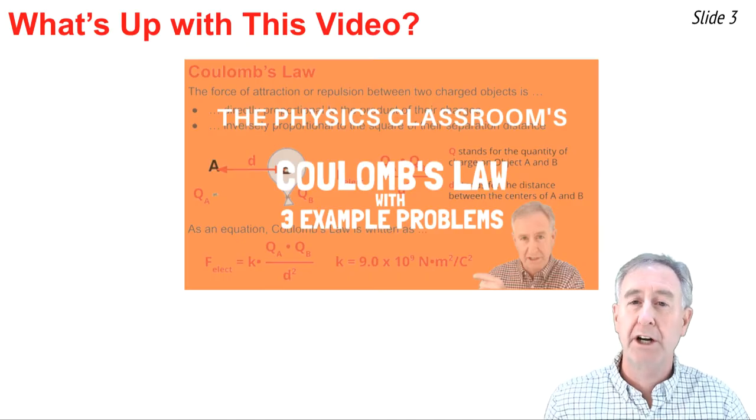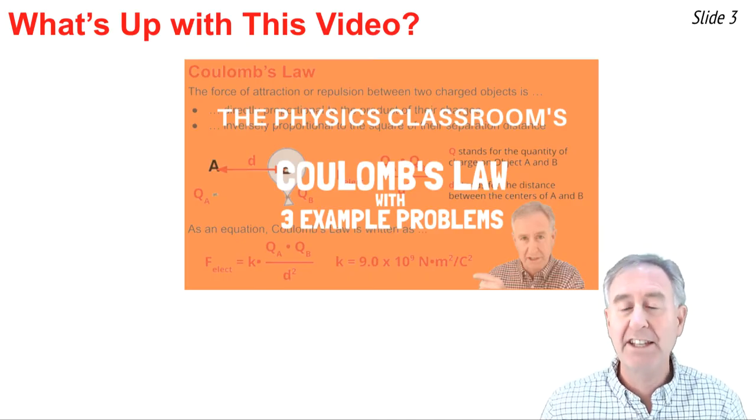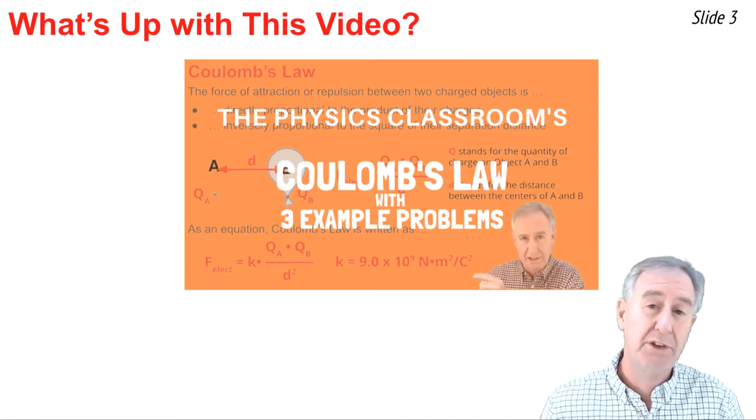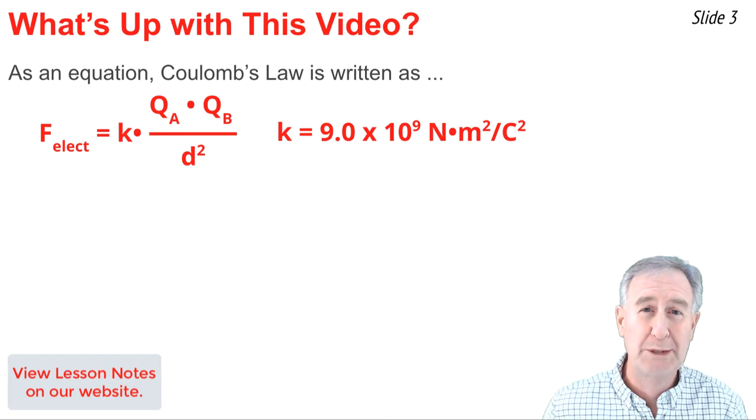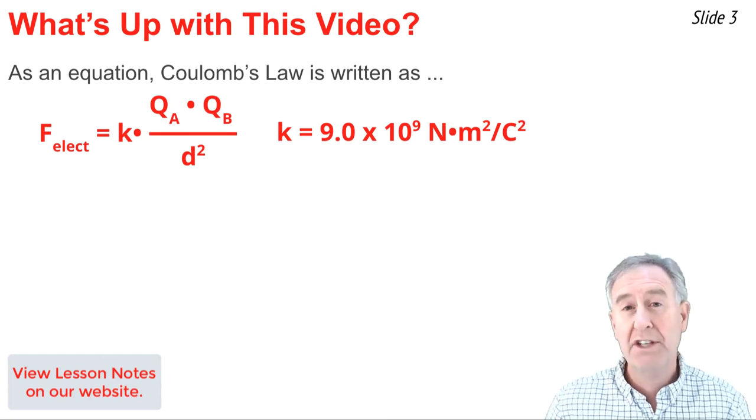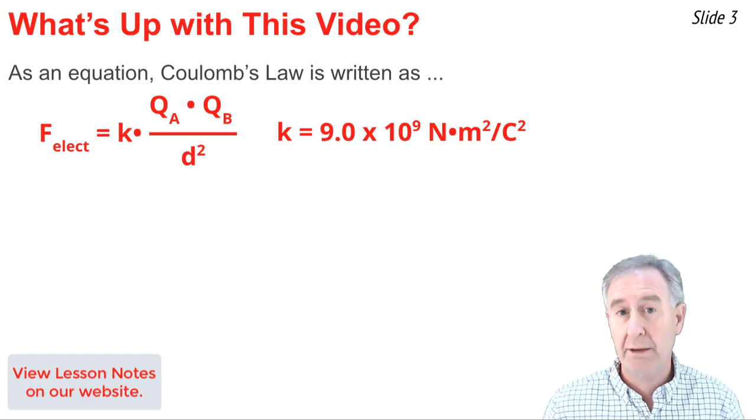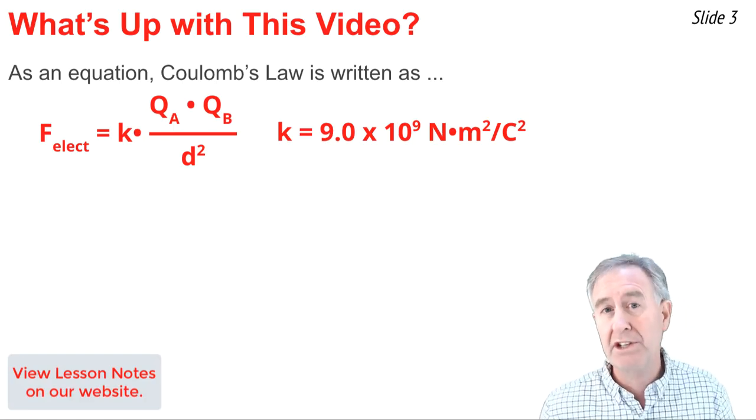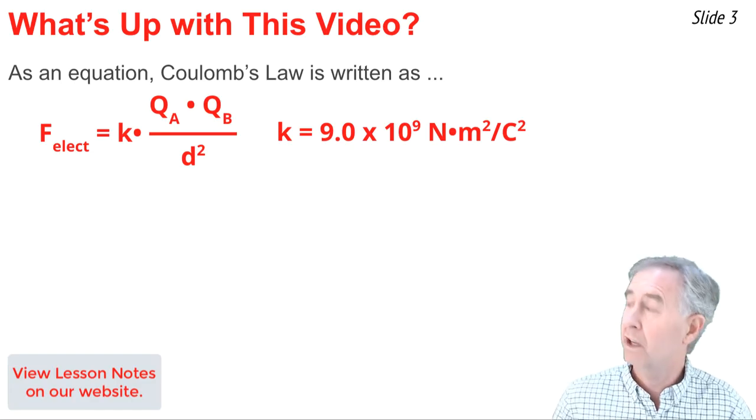This video builds upon our Coulomb's Law video that came earlier in this series. There's a link to that video in the description section if you need to review it. In this video, we're going to take it a bit further using Coulomb's Law. Here's the law. It states that the electrical force of attraction depends upon the quantity of charge on objects A and B and the separation distance between them. The proportionality constant K has the value given.